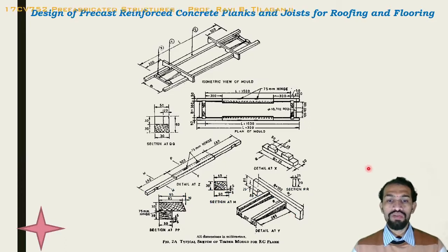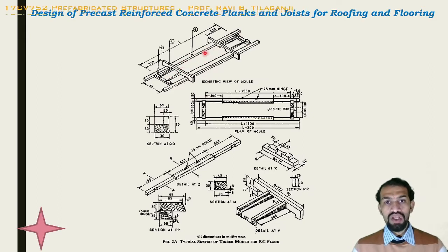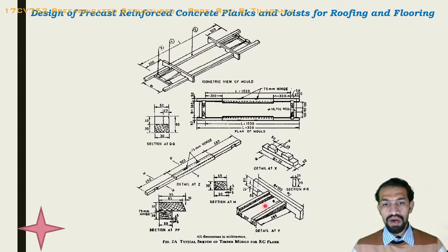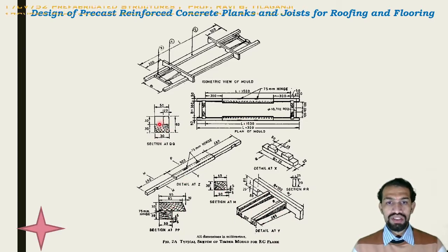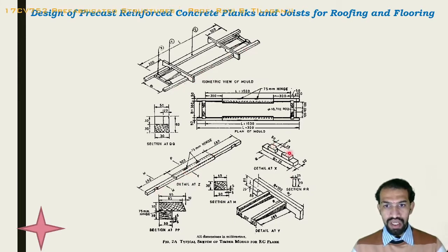This is the formwork for preparing the reinforced planks. The wooden material is provided such that concrete and reinforcement are placed and the haunching system is achieved. The interlocking system between planks is visible here, and the haunched part is shown in the detailed section. At the QQ section, we can see the edge detail, the beading part, and the support where the haunch comes to rest.